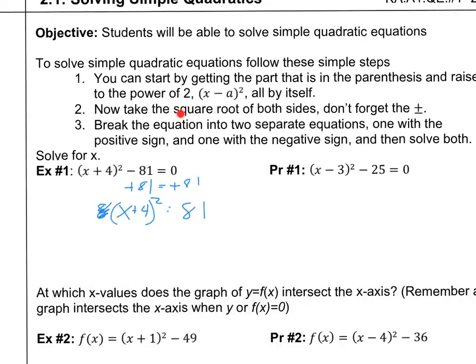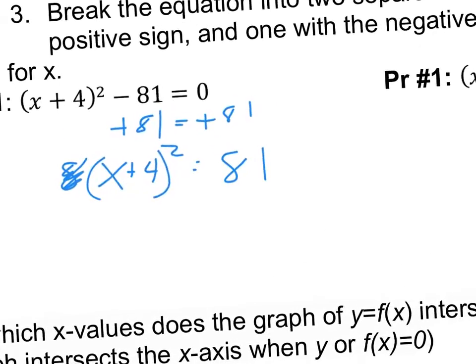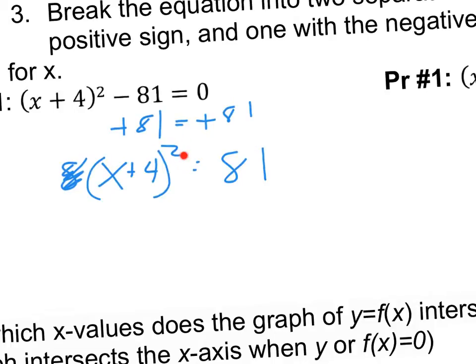All right, the next thing says now take the square root of both sides. Don't forget the plus minus. This is important now. In order to undo a square when it's only a square on one side of the equation, we can just take the square root. So on the left, this is just going to leave us with x plus 4 because the square root and the square are opposites of each other. So they cancel each other out.